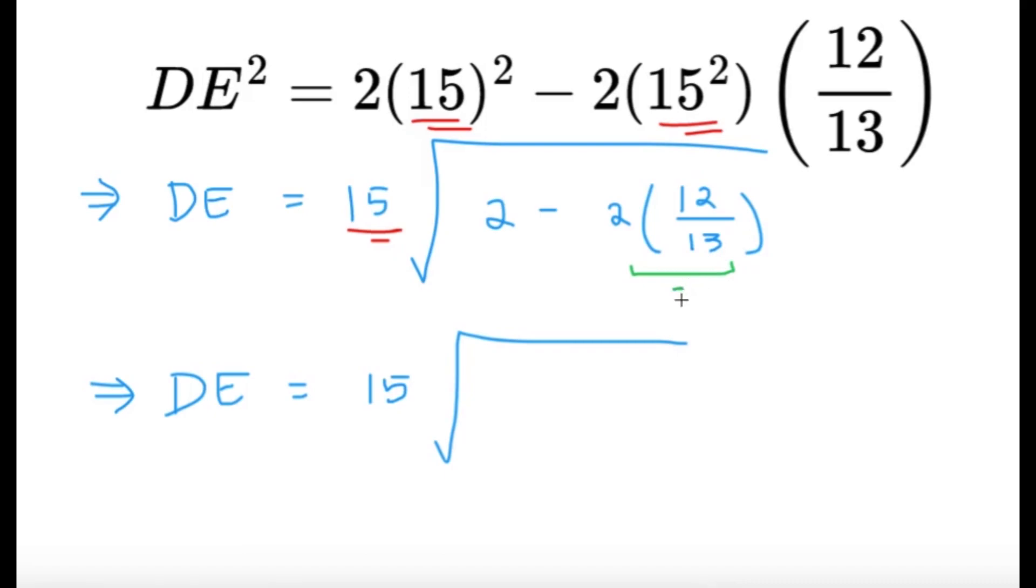Now, 2 times 12 over 13 is 24 over 13. Then the 2, I can write as 26 over 13, so whatever remains inside the square root would just be equal to 2 over 13.